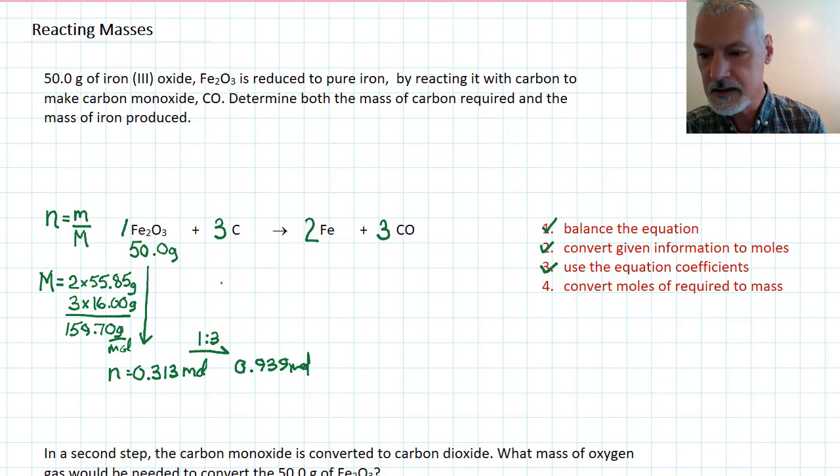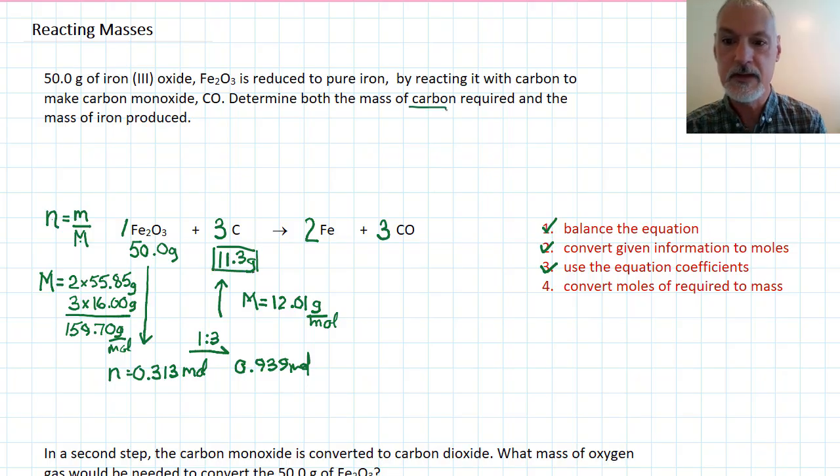And my final step now is to take that information, convert that back into grams, and that requires the molar mass. In this case, of carbon, which is 12 grams per mole. And by rearranging this equation, the mass will be the number of moles times the molar mass, multiplying these two together. And when I do that, I get 11.3 grams. So, that's my solution to determining the first part of this question, the mass of carbon required.